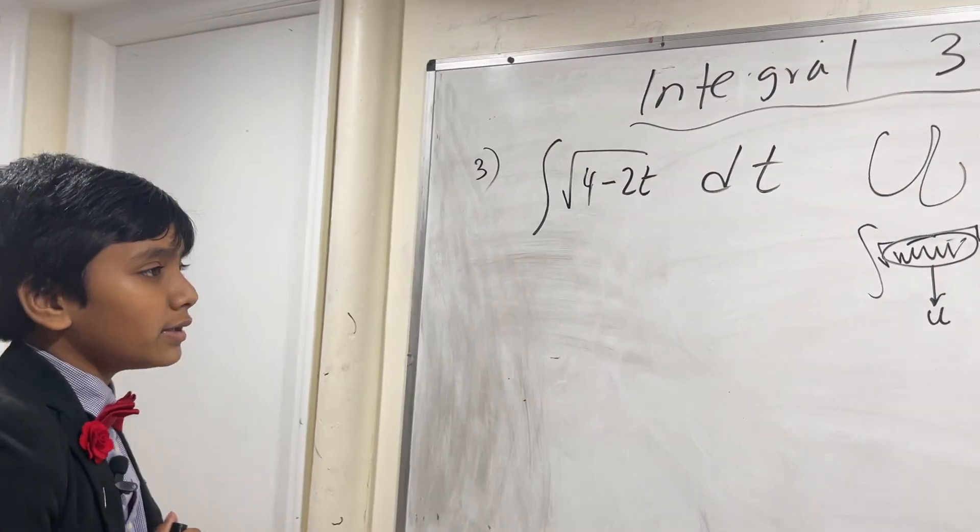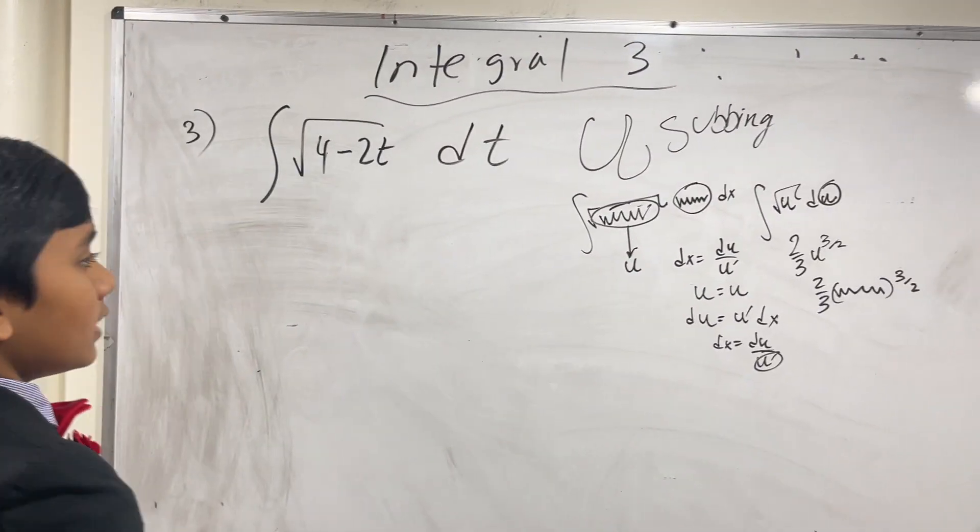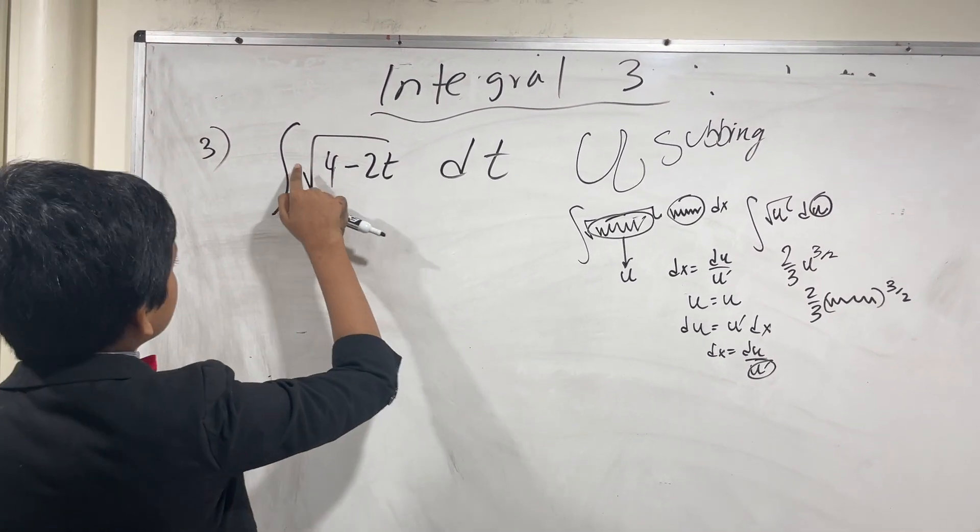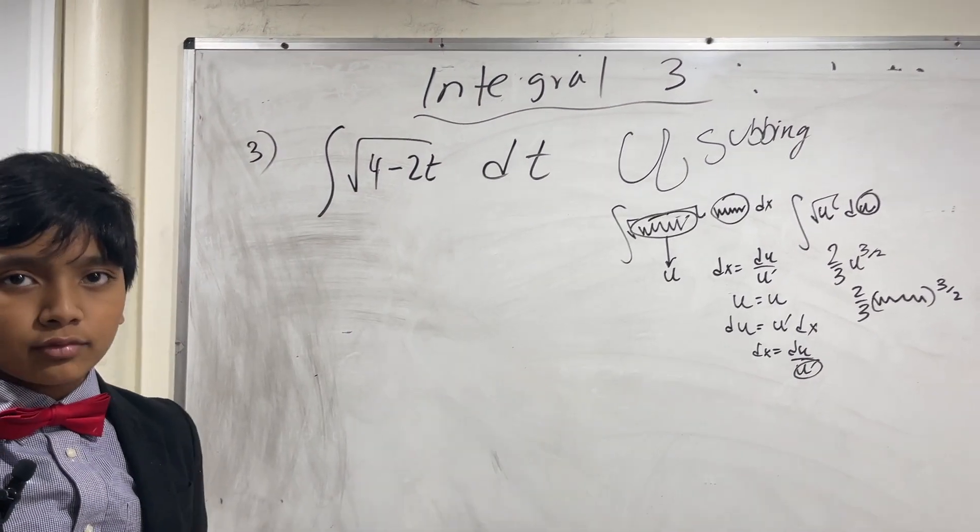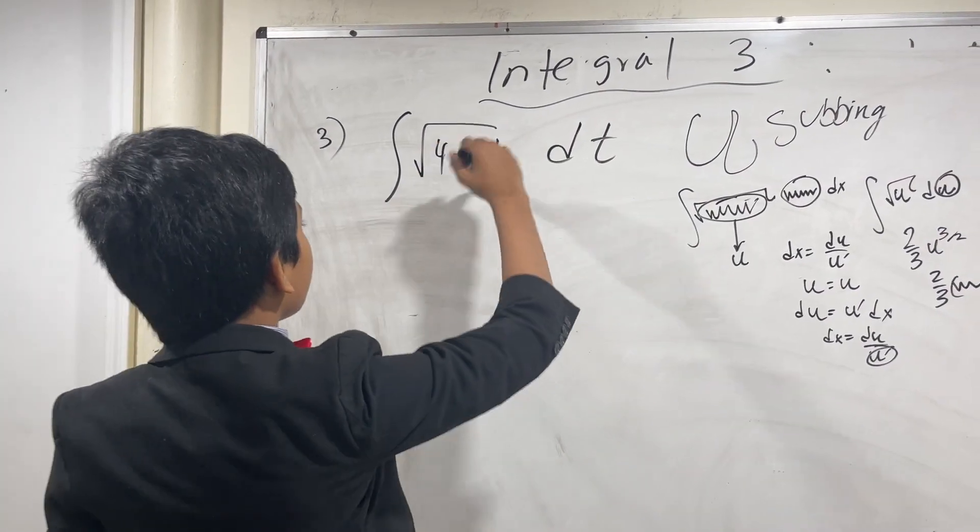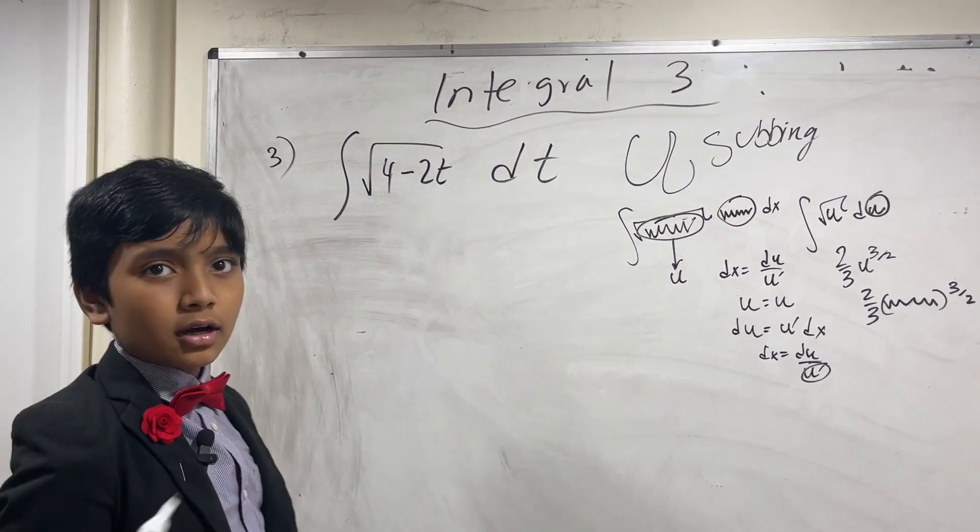Alright. So now let's try that strategy here. Now there is nothing to cancel out outside these little square roots. But what is good is that taking the derivative of this leaves us with a constant.